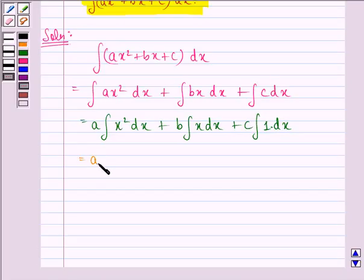This is equal to a times, now ∫x²dx will be x raised to power 2+1 that is 3 divided by 2+1 that is 3, plus b times x raised to power 1+1 that is 2 divided by 2, plus c times, now 1 is same as x raised to power 0, so x raised to power 0+1 is x divided by 1, plus some constant c₁.